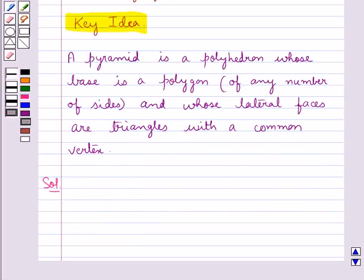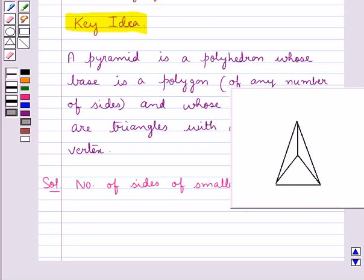We already know that the number of sides of the smallest polygon is equal to three, that is, it is a triangle. Let's have a look at the pyramid. This pyramid has a triangular base.